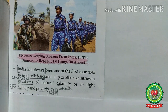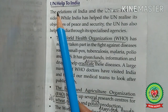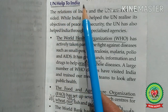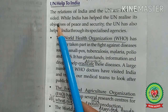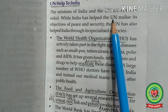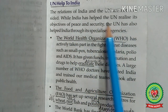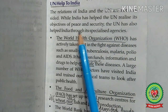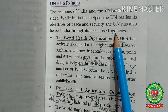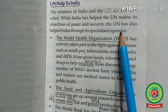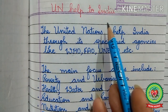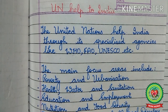We can conclude that India supports all UN activities in maintaining world peace, and India's contribution as a member of the Security Council and other organs has always been noteworthy. The relations of India and the UN are not one-sided: while India has helped the UN realize its objectives of peace and security, the UN has also helped India through its specialized agencies.